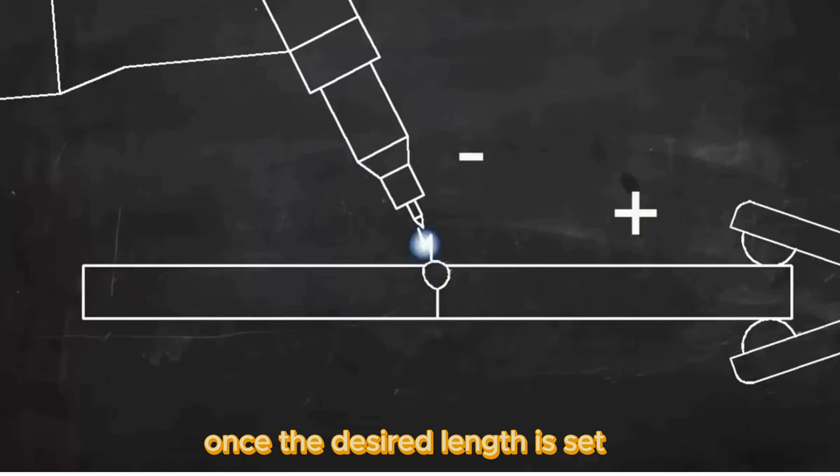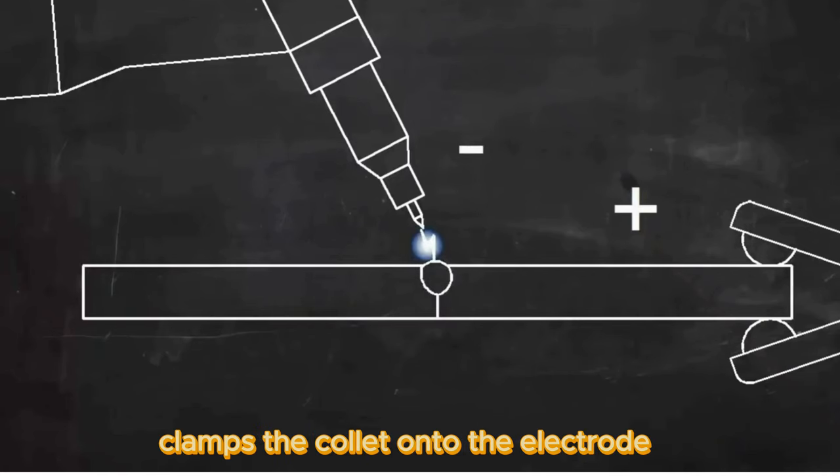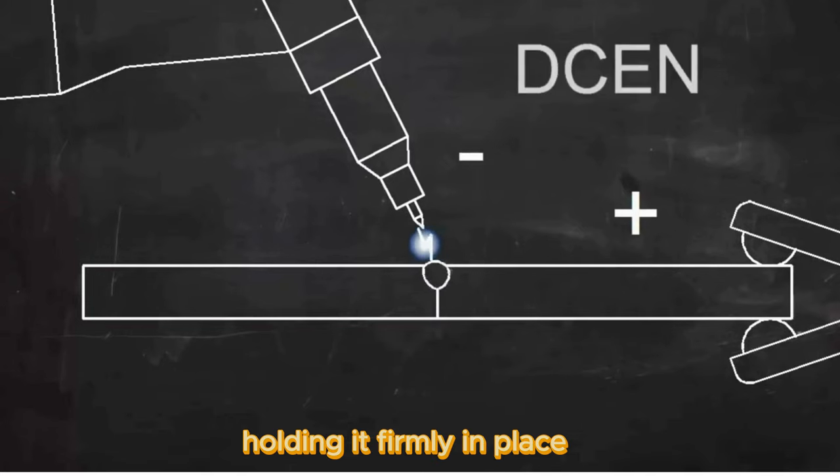Once the desired length is set, tightening the end cap clamps the collet onto the electrode, holding it firmly in place.